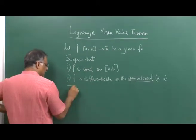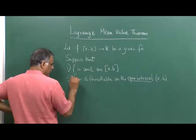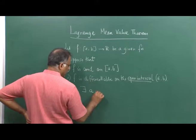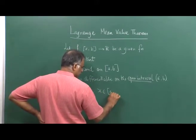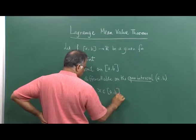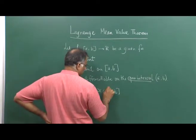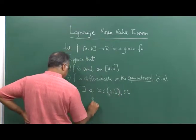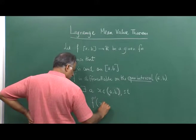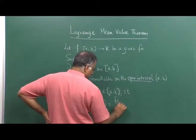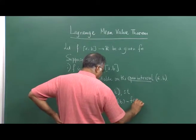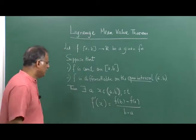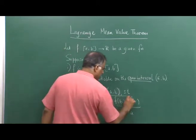If these two conditions are satisfied, then there exists — this is the symbol of 'there exists' — an x in the open interval (a, b) such that f'(x) is equal to [f(b) − f(a)] / [b − a]. This is the statement of the Lagrange Mean Value Theorem.